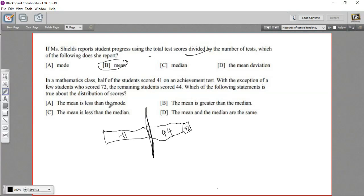Now, our choices here are the mean is less than the mode, the mean is less than the median, the mean is greater than the median, and the mean and median are the same. Well, let's think about the mode. The mode is the number that occurs the most often. Half the students got 41, and there's no greater number than that here. 44 is less than half the students. 72 is definitely less than half the students. So this mode has got to be 41. Now, could the mean be less than the mode? Well, the mean is the average. So we're going to add all this together and divide by the number of test scores. We don't know the number, but it's got to be higher than 41. 41 is the lowest score. So this is not our answer.